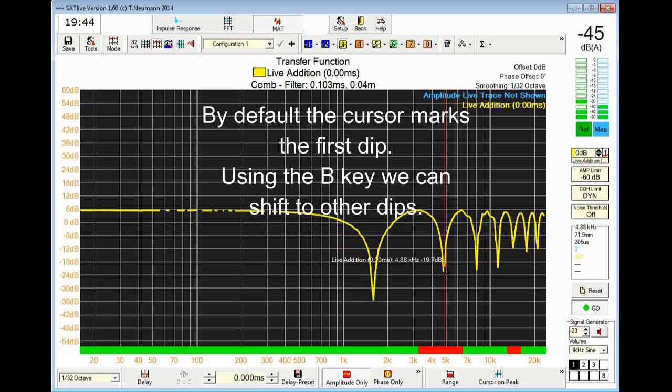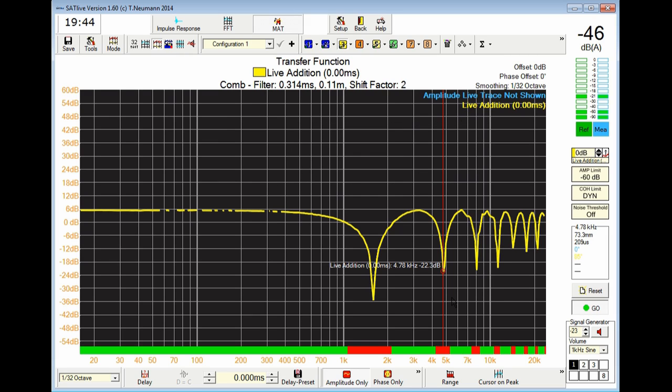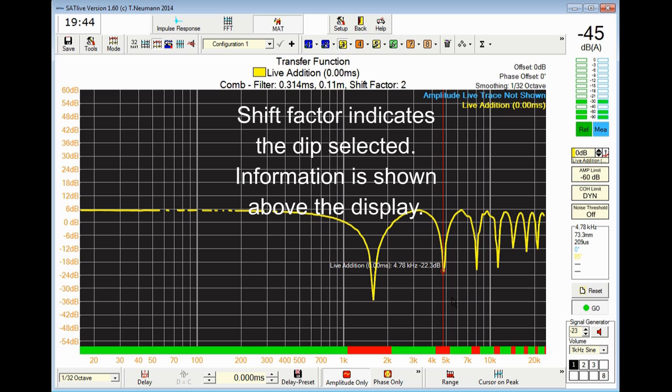But you can also set the cursor on the second one and add something like shift factor to say okay this is the second cut.